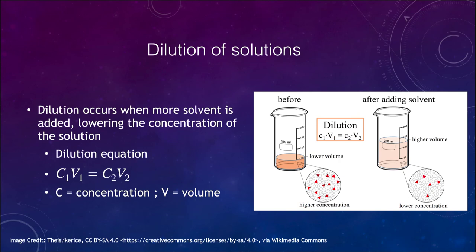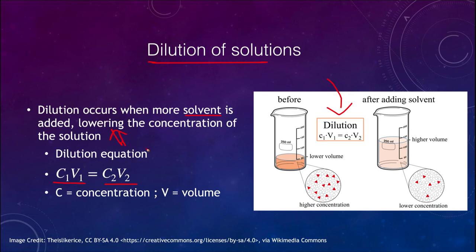The other concept we want to look at is dilution. The dilution equation is: concentration one times volume one equals concentration two times volume two (C1V1 = C2V2). Dilution occurs when more solvent is added, which lowers the concentration — you can think of it as adding more water if water is your solvent, which decreases the concentration. We can use this equation to calculate the new concentration.